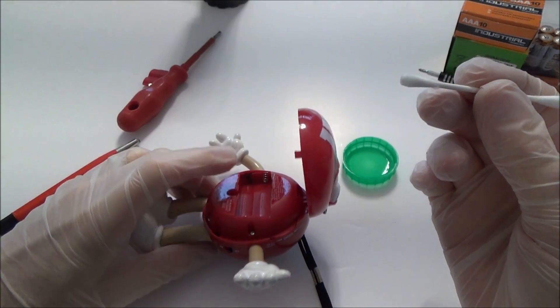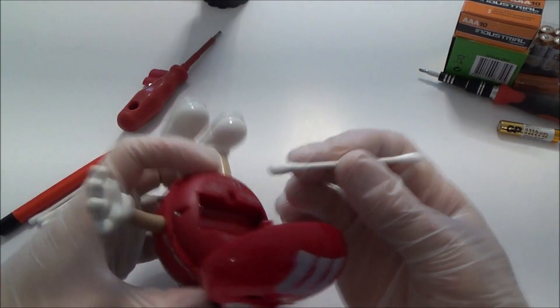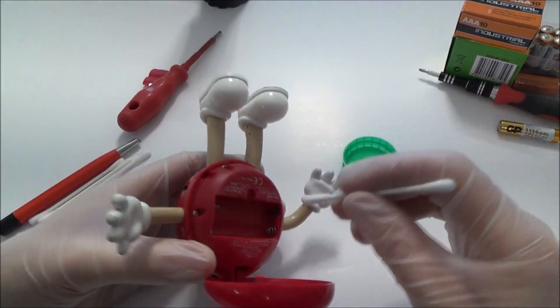I'm only going to put a bit on because I don't want to saturate it, otherwise the vinegar is going to get inside the actual toy itself. The best way would be to completely take it apart but obviously most people are not going to do that.